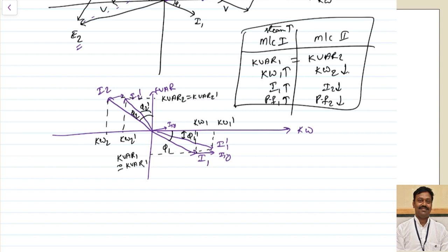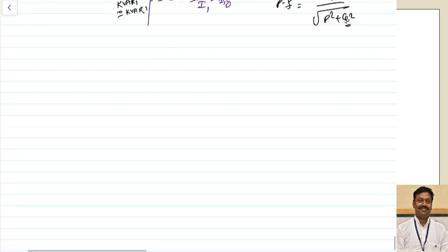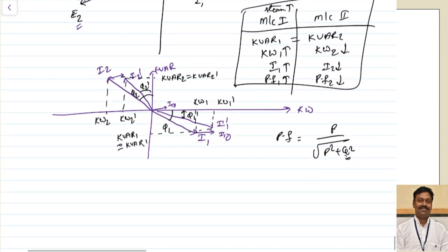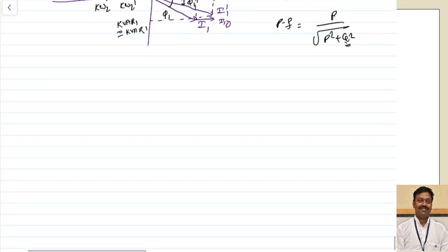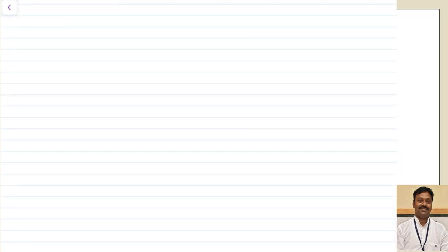The power factor changes because cos φ = P / √(P² + Q²). For machine 1, reactive power is unchanged but active power increases, so power factor improves. For machine 2, reactive power is unchanged but active power decreases, so power factor worsens. Whenever steam input is increased, the shaft speed increases, and the machine starts operating at a higher frequency.